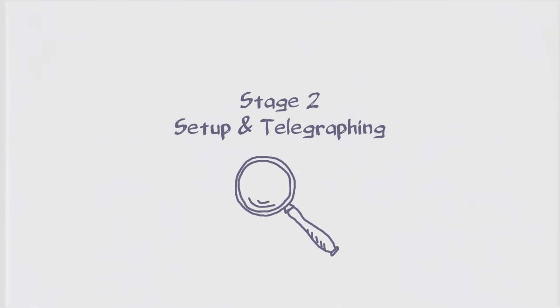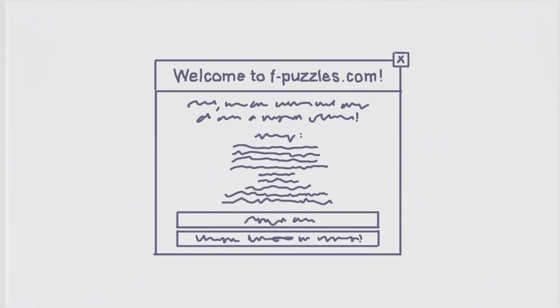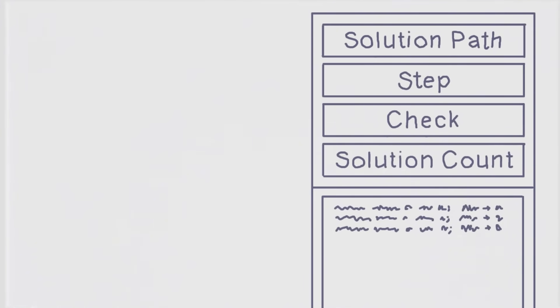Stage two, set up and telegraphing. So we begin with setting up the main attraction, be it a single deduction or a sequence of a few leading from one to the other. I used fpuzzles.com for the bulk of the creation of this. It's particularly great for setting classics with advanced techniques because it doesn't have much advanced techniques programmed into it in the first place. So if your puzzle is able to defeat the solver, you probably did well in limiting possible bypasses. Unless of course there's an easier advanced technique fpuzzles also doesn't know. I'll talk about this in greater detail in a later stage.